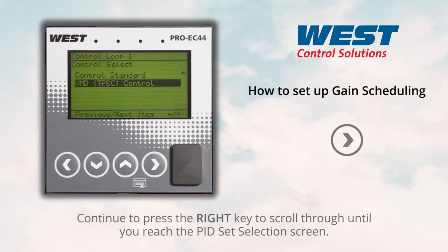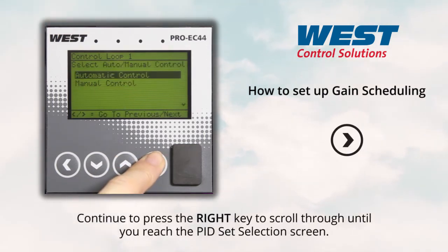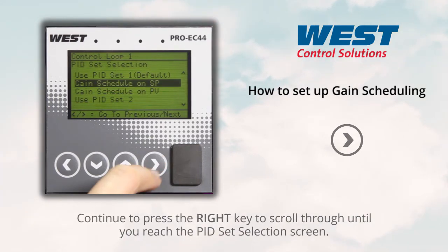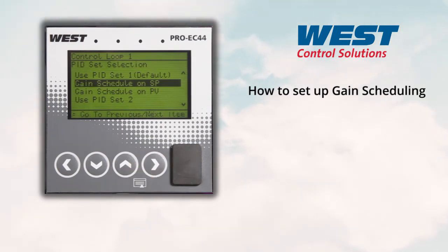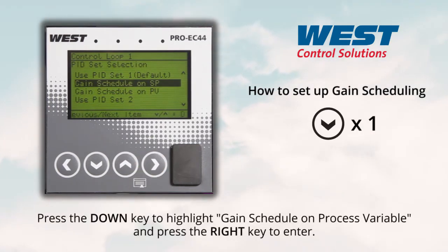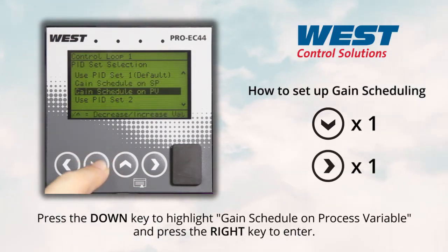Keep pressing the right key to scroll through until you reach the PID set selection screen. Press the down key to highlight gain schedule on process variable, then press the right key to enter.